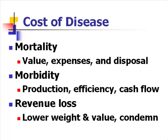Costs of disease — we can break those down as mortality, morbidity, and revenue loss. With mortality, a dead pig isn't worth too much. And we have expenses with respect to feed and veterinary costs that have gone into that pig up to the time that animal died, plus disposal costs. Morbidity — the animal survived but it is costing us because the disease impact is causing things to the animal, with production impacts affecting efficiency and cash flow. Revenue loss includes lower weight and value, and condemnations.